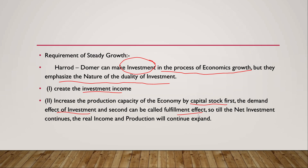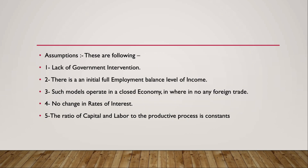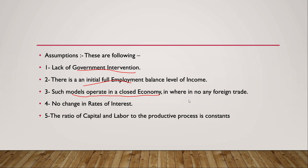The following are the assumptions of the Harrod-Domar model. First is the lack of government intervention, since this is a classical Keynesian model. Second, there is an initial full employment balance level of income — we assume the economy starts at full employment. Third, such models operate in a closed economy.